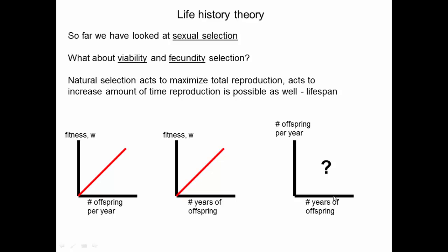Both of these traits have a positive relationship with fitness. But what sort of relationship do these traits have with one another? If an organism reproduces for more years, we would expect them to generate fewer offspring per year. Another way of thinking about this: if an organism has fewer offspring per year, it lives longer and reproduces for more years. So although each trait has a positive relationship with fitness, they have a negative relationship with one another. Life history theory examines trade-offs like this between survival and reproduction.